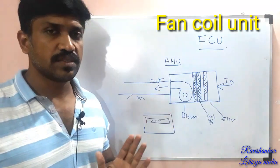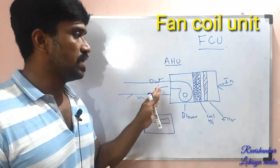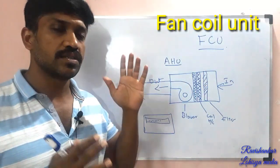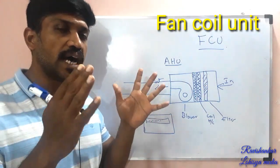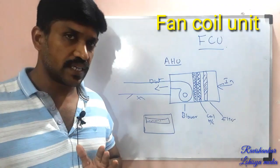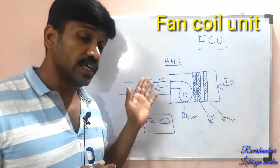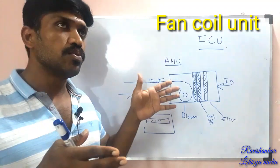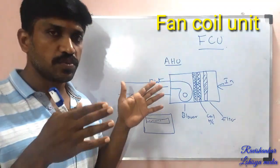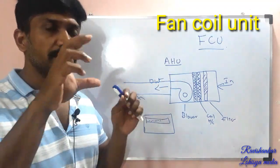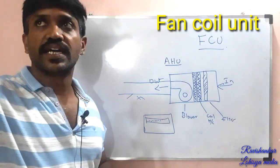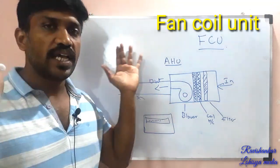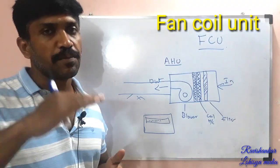This coil unit is used as a refill unit as well. You can use mini ducting, small ducting in this area — 3 to 4 ducts — to distribute all the conditioned air.